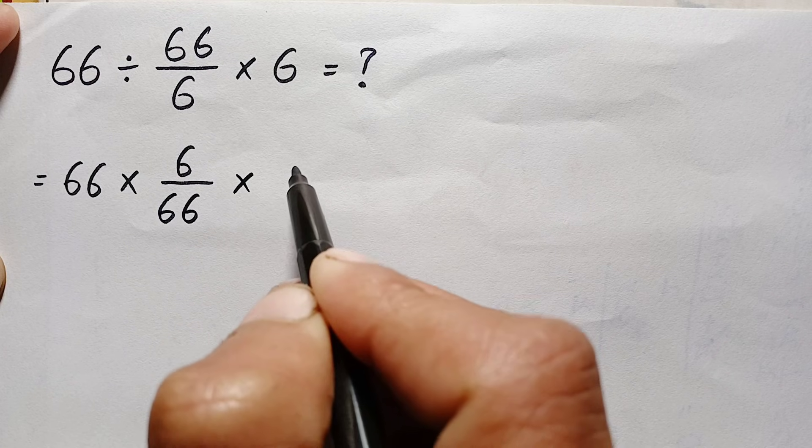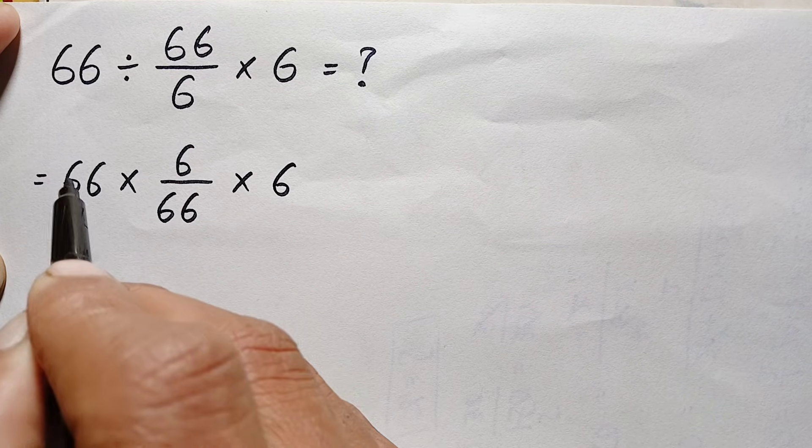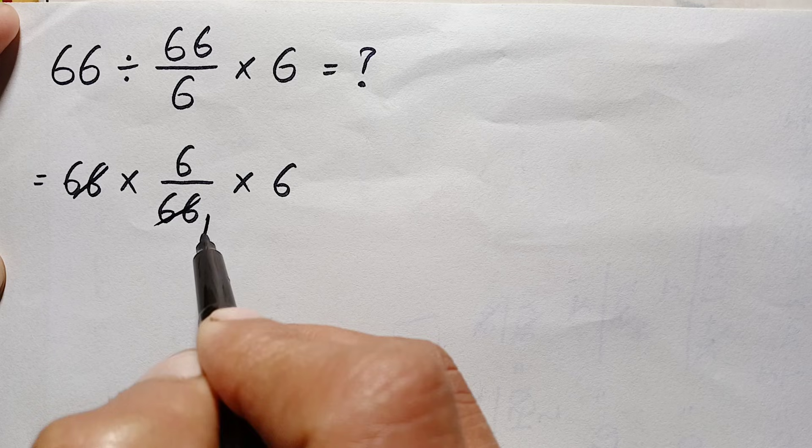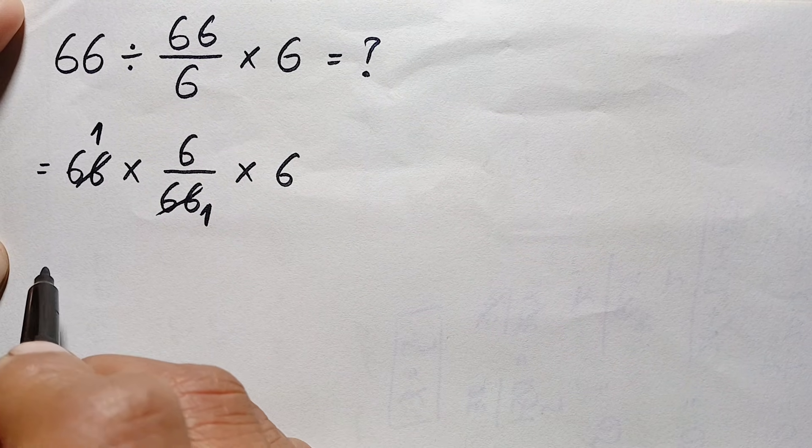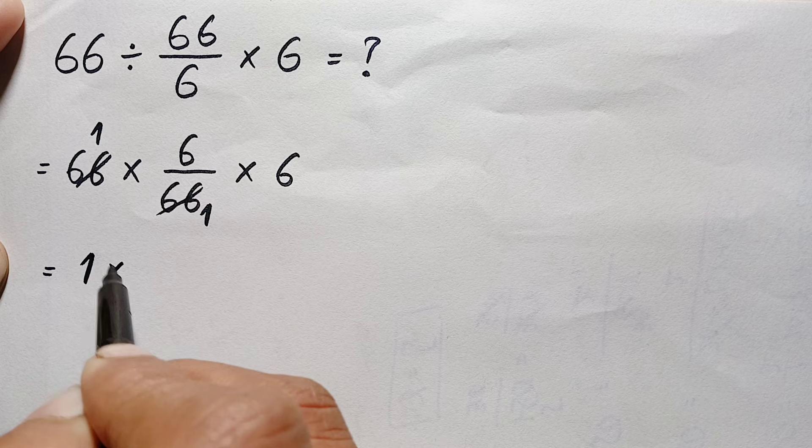Then we can cancel 66 with 66. This is 1, this is also 1. So further this will become just 1 times 6 by 1, which is simply 6 times 6.